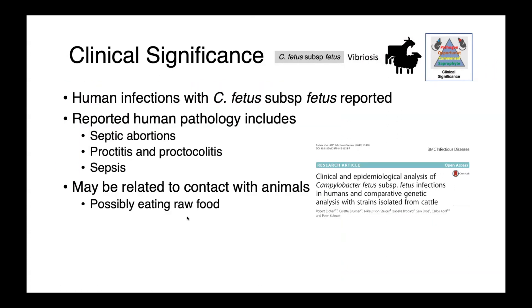Human infections with Campylobacter fetus subspecies fetus are also reported. The types of conditions associated with this organism include septic abortions, proctitis and proctocolitis — inflammation of the rectum and colon — and also sepsis. This may be related to contact with animals and possibly eating raw food, although more research is required to fully nail down exactly how transmission occurs.